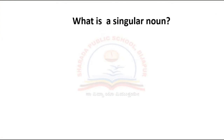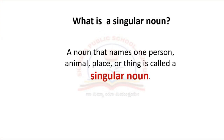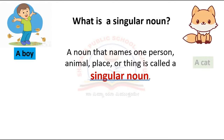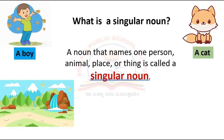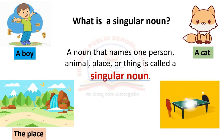What is a singular noun? A noun that names one person, animal, place or thing is called a singular noun. For example, a boy, a cat, a place, a thing.